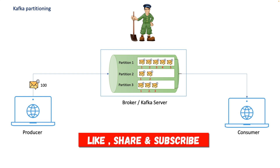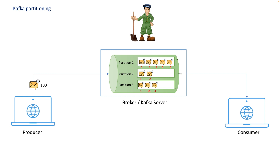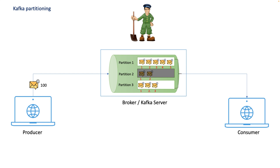Now, how can you ensure your messages go exactly where you want them to go? Maybe you want to optimize data processing or improve load balancing. I want my producer to send all messages to a single partition, and I want my consumer to read from a single partition. How you can control this partition assignment is what I'm going to demonstrate in this video.